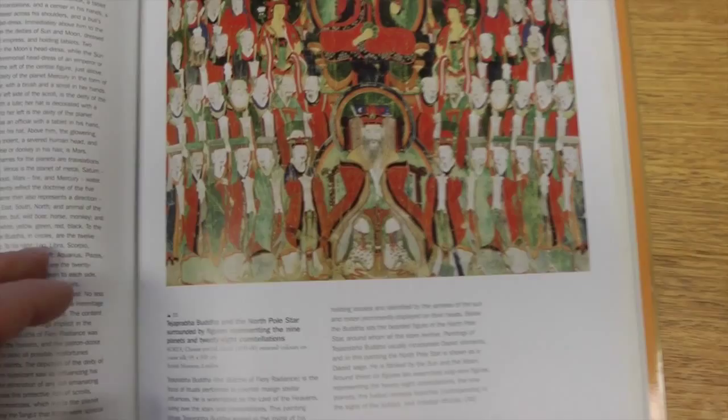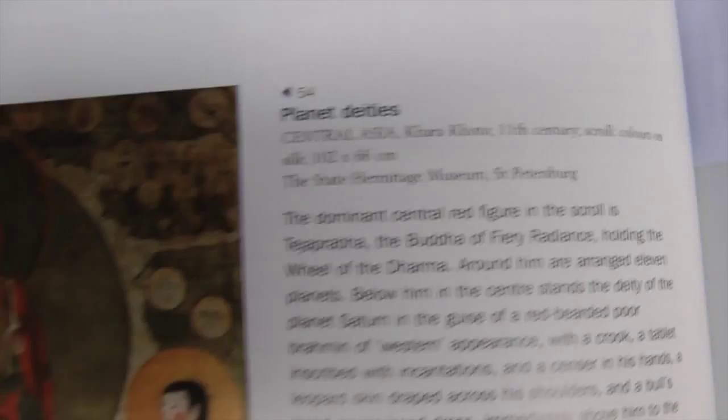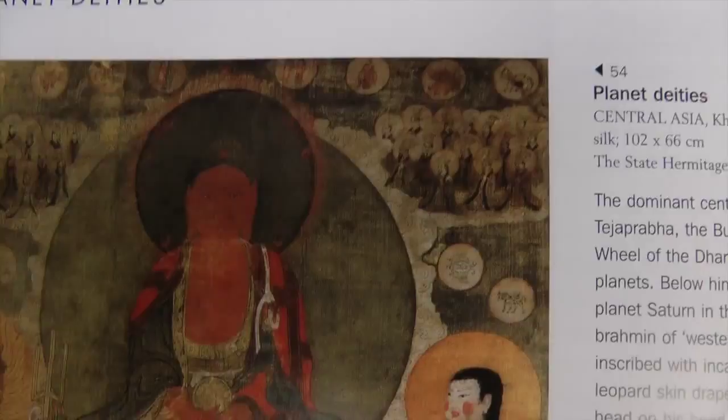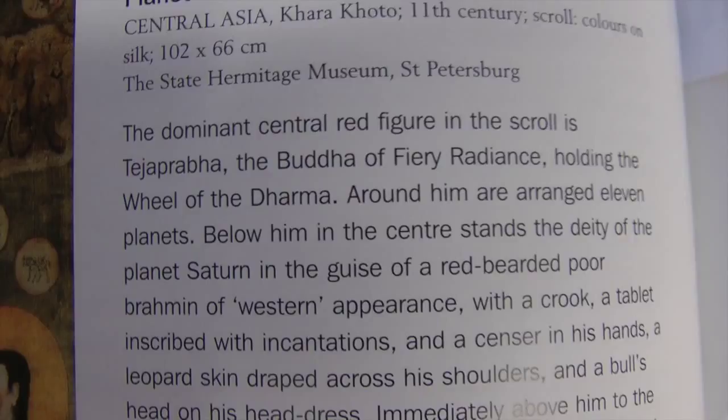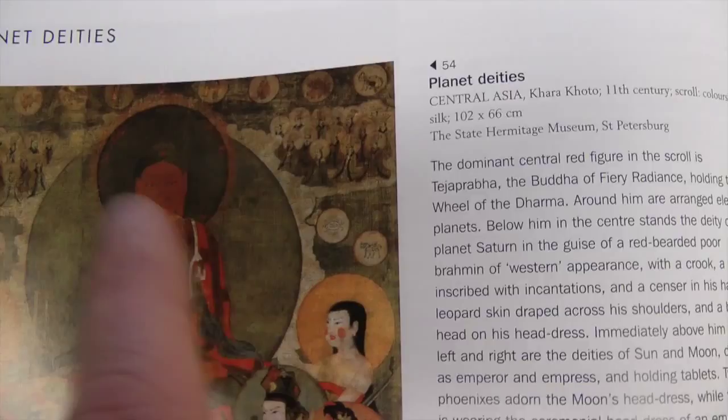Planet deities — this is from Central Asia, the 11th century. And of course the notion of planetary deities is not just an eastern thing, it's also a western notion — the deities of the planets and the sun and the moon. This one here is perhaps the sun and this one here is perhaps the moon, with the fiery Buddha, the Buddha of fiery radiance, just here. This one's from western Tibet, on the lotus here with the hand signals.